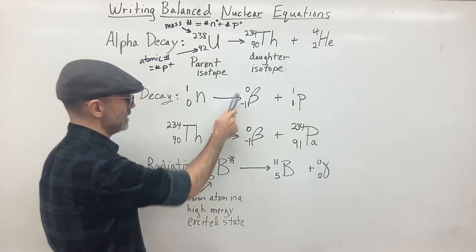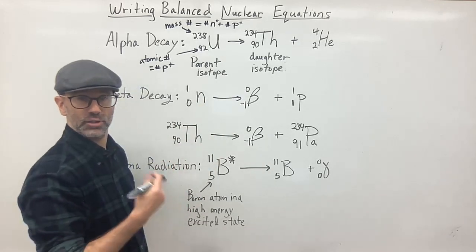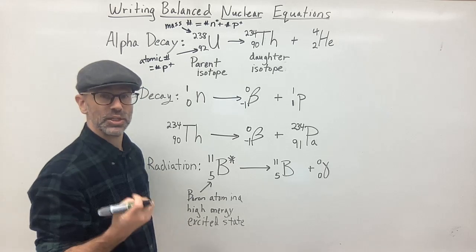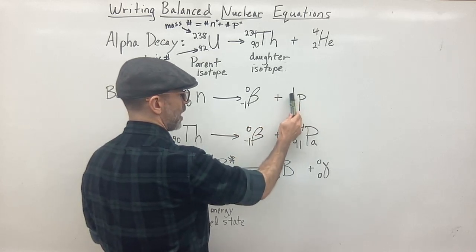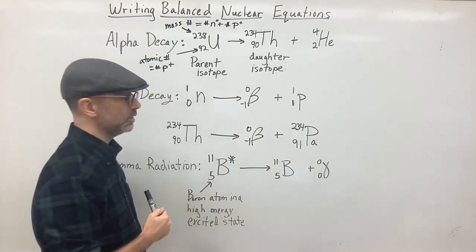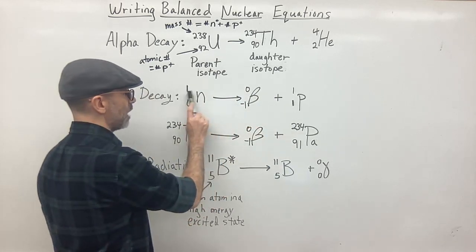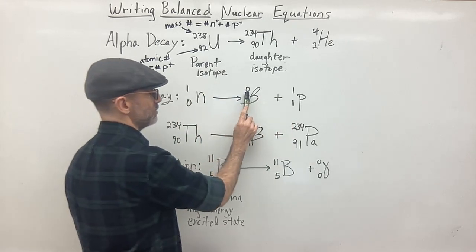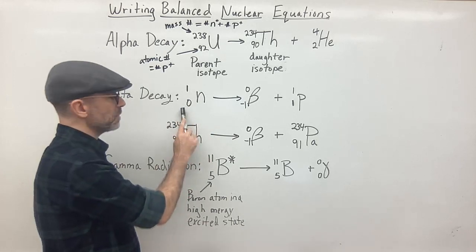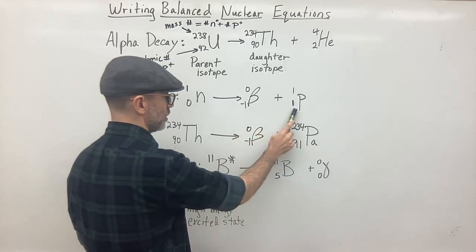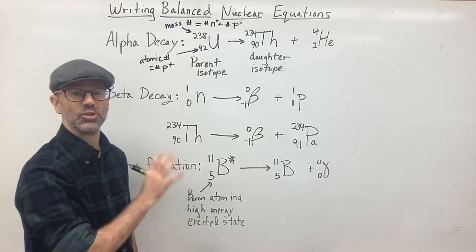The beta particle, which is your electron, has a zero mass number — not because it's massless, but because it has no protons or neutrons. It's much smaller than a proton or neutron, so we give it a zero for the mass number and a negative one for charge. The proton left behind has a mass number of one and a charge of positive one. You can see that the top numbers add up to the same on both sides: one equals zero plus one. The bottom numbers: zero equals negative one plus one. So both sides are balanced.